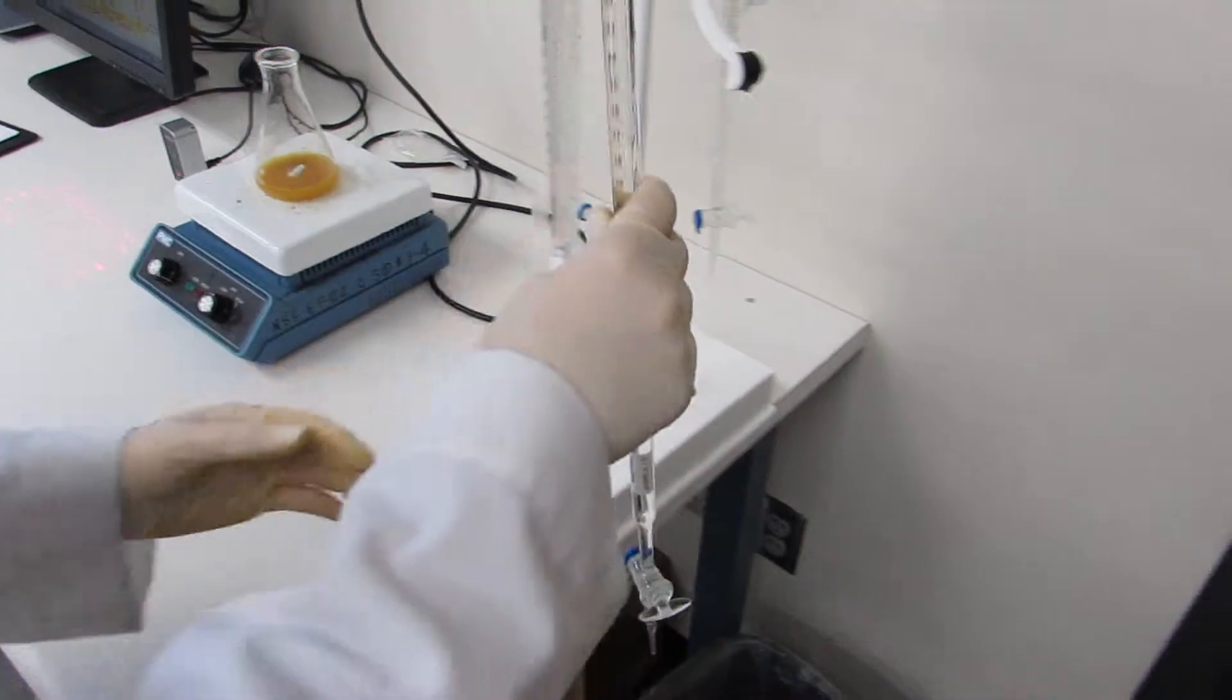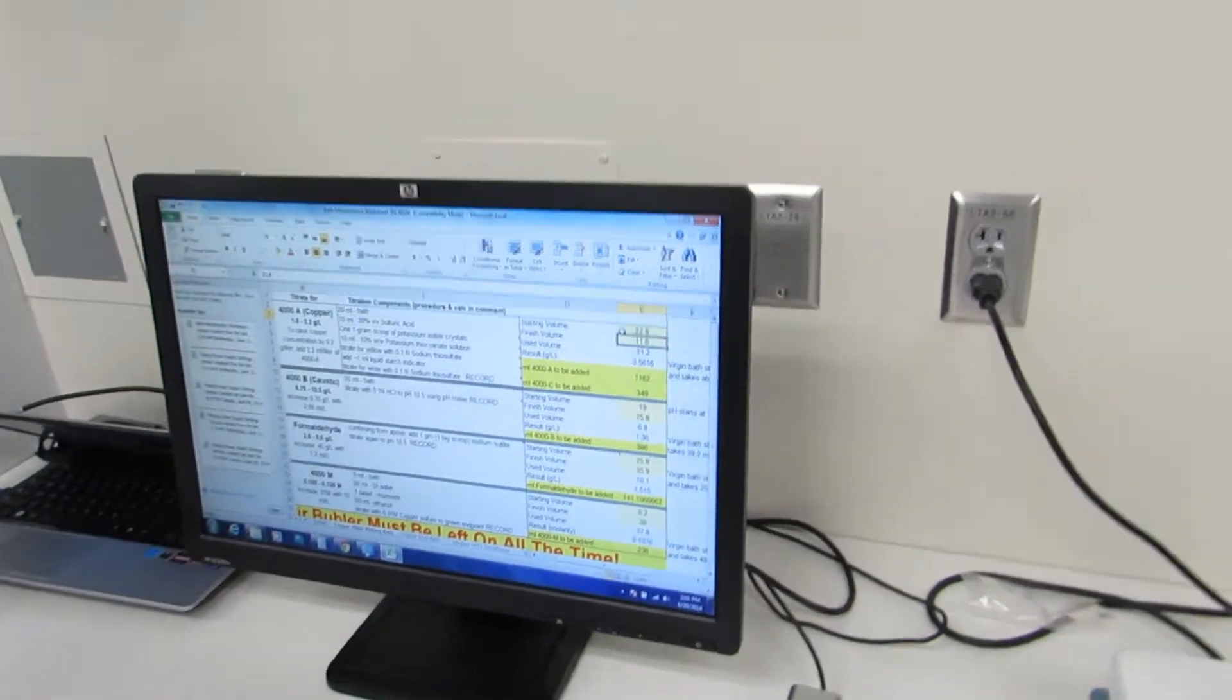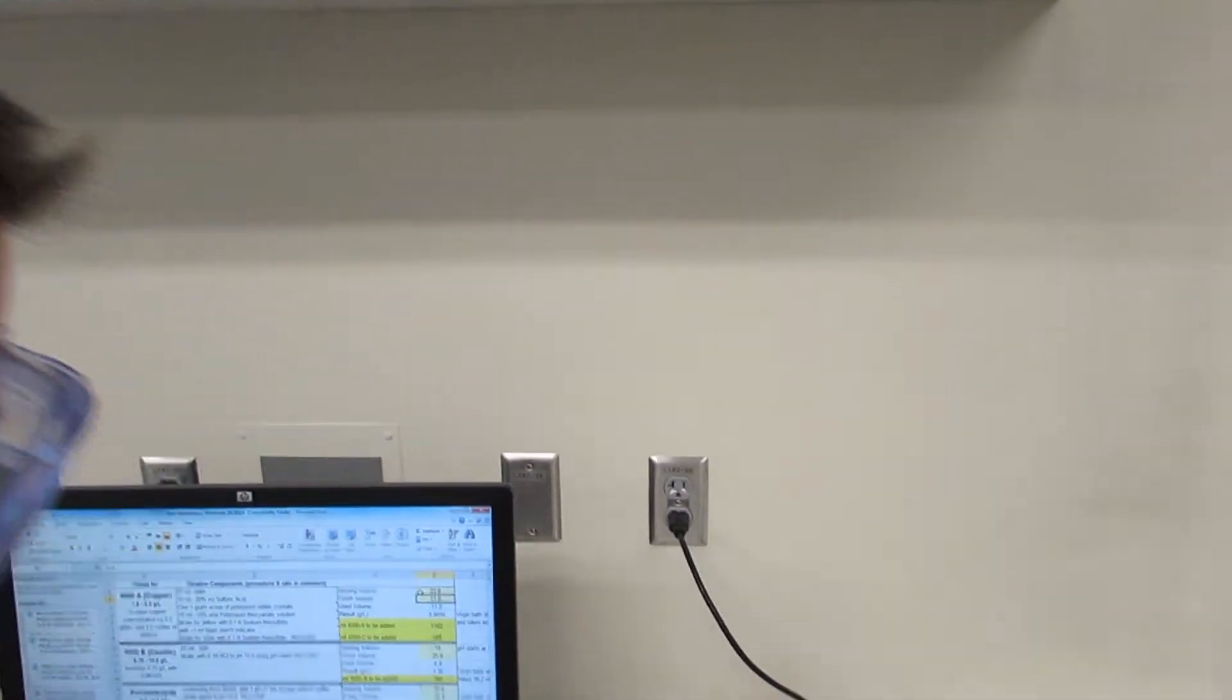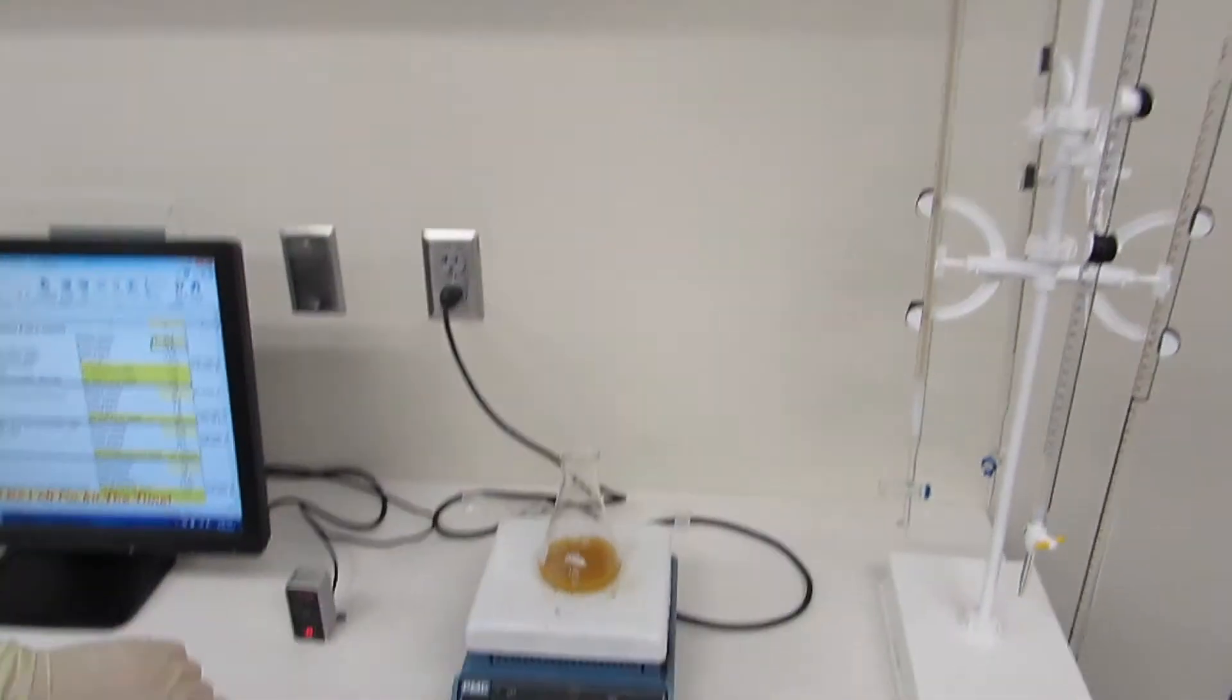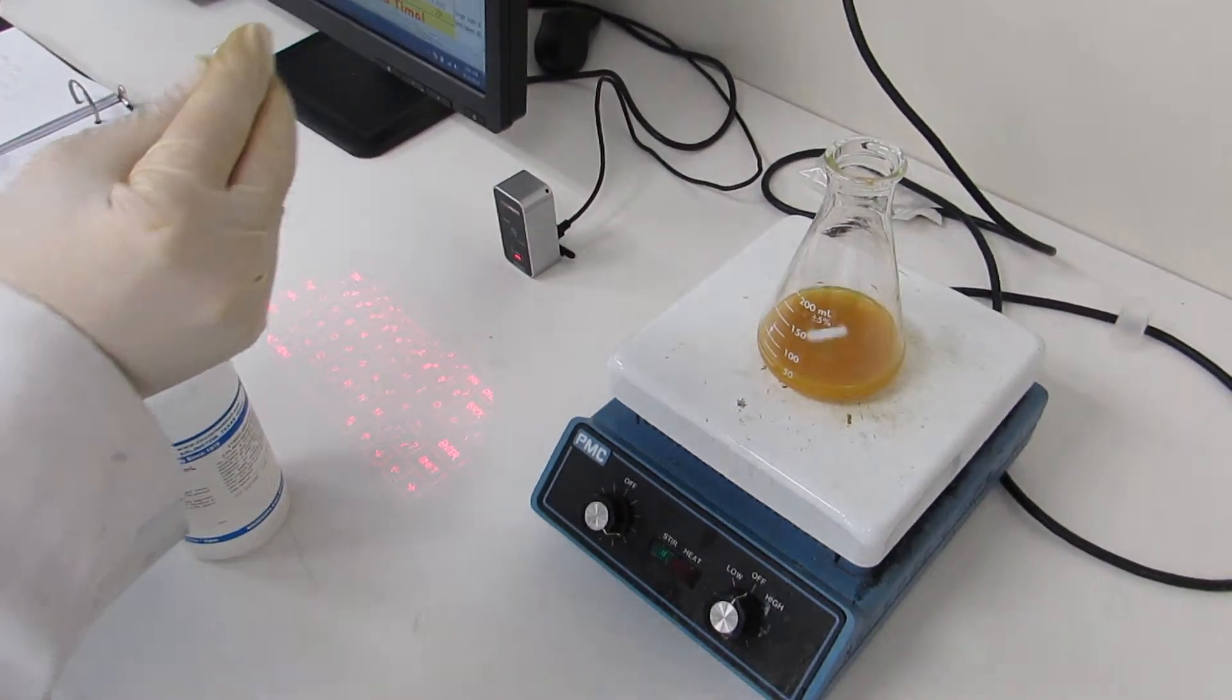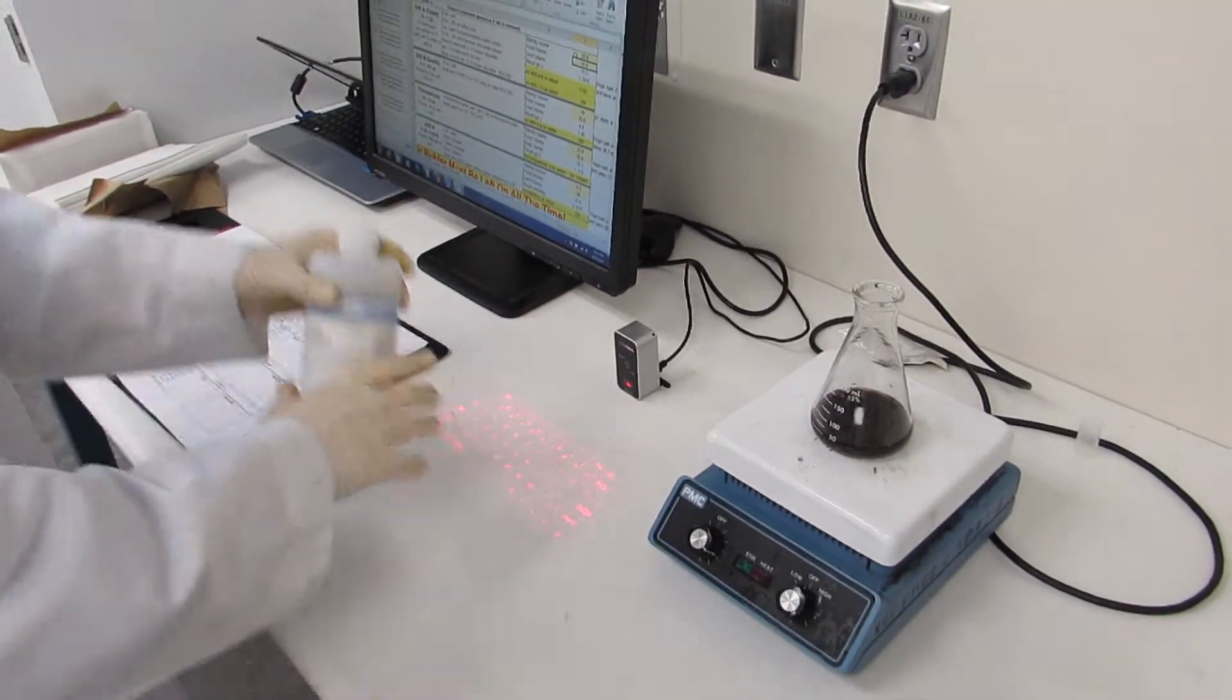So we stop titrating then and replace the burette. Then we have to add one milliliter liquid starch indicator. We get that from this cabinet. We get a disposable pipette. The one milliliter mark right there. Make sure to dispose of this in the biohazard junction. And then replace the starch indicator solution.